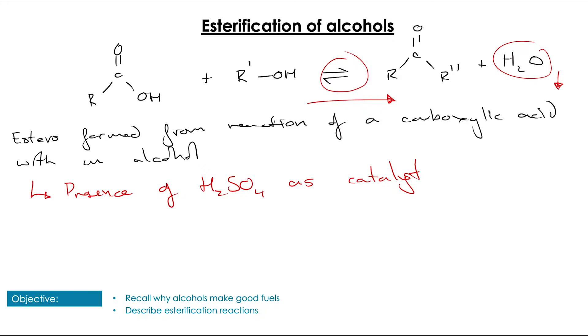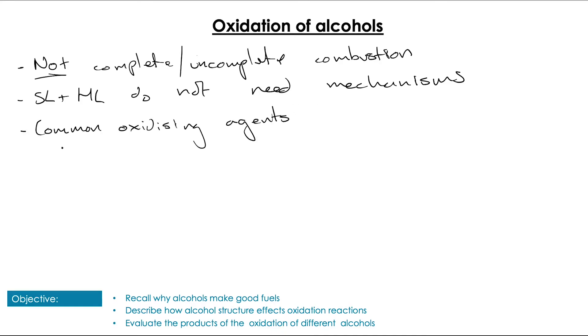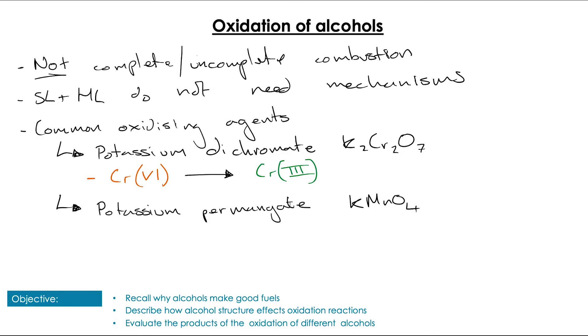Combustion is not the only oxidation reaction we can do with alcohols. Indeed, the oxidations of alcohols that are not complete or incomplete combustion are very important. The good thing is neither SL or HL students need mechanisms for these. We just need the reaction scheme. Instead, we use oxidizing agents to induce changes in the alcohol molecules. Common ones include potassium dichromate, which goes from an orange color and then turns to a green color as the oxidation state goes from six to three, and potassium permanganate, which goes from a deep purple color when it is in oxidation state of plus seven down to either colorless or very pale pink color when it is in oxidation state plus two.